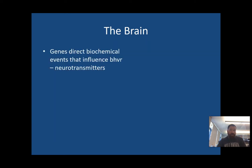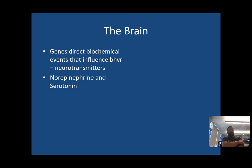Let's talk about what's going on in the brain. When we talk about depression in particular, the brain tends to lack serotonin and norepinephrine, which makes sense — if the body is slowing down, the neurotransmitters aren't doing their job. Treatment for depression will sometimes involve increasing serotonin and norepinephrine levels, which can really help jumpstart the body out of a depressive episode.